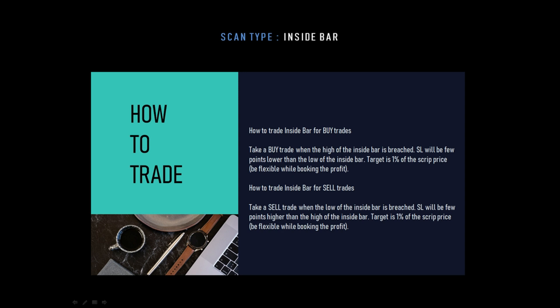Moving on to how to trade the inside bar chart pattern — the inside bar chart pattern is a simple yet very powerful chart pattern that can be traded in intraday as well as swing trading. As the name refers, an inside bar pattern is created when the high and the low of the latest candlestick remains within the high and the low of the previous candlestick. In other words, the latest candlestick is smaller and remains within the high-to-low range of the prior candlestick. It is a two-bar price action trading strategy.